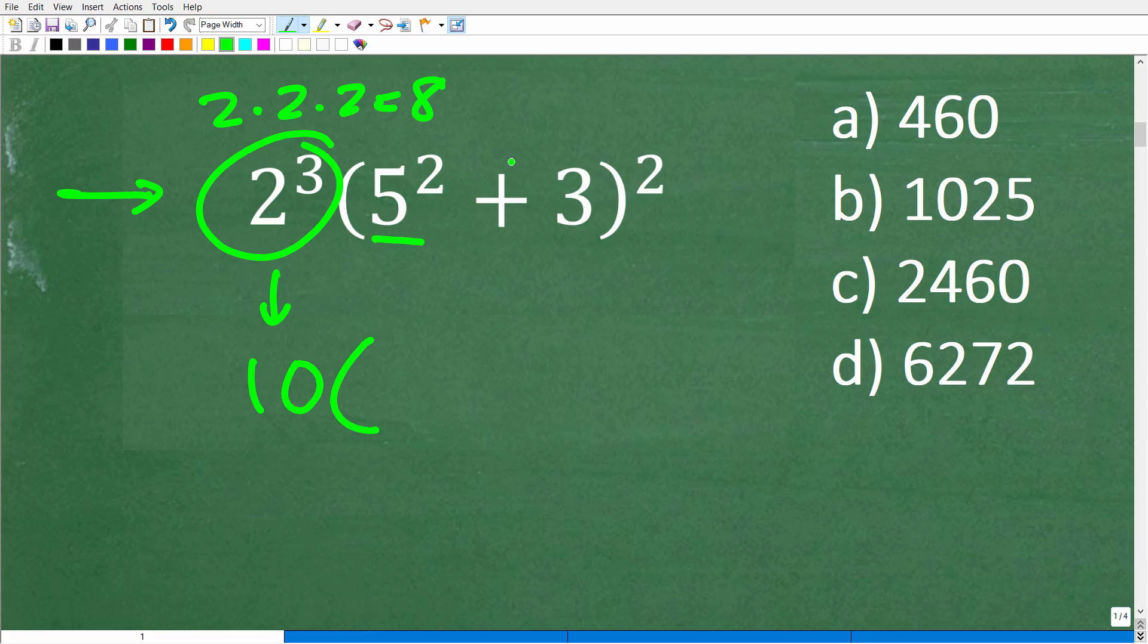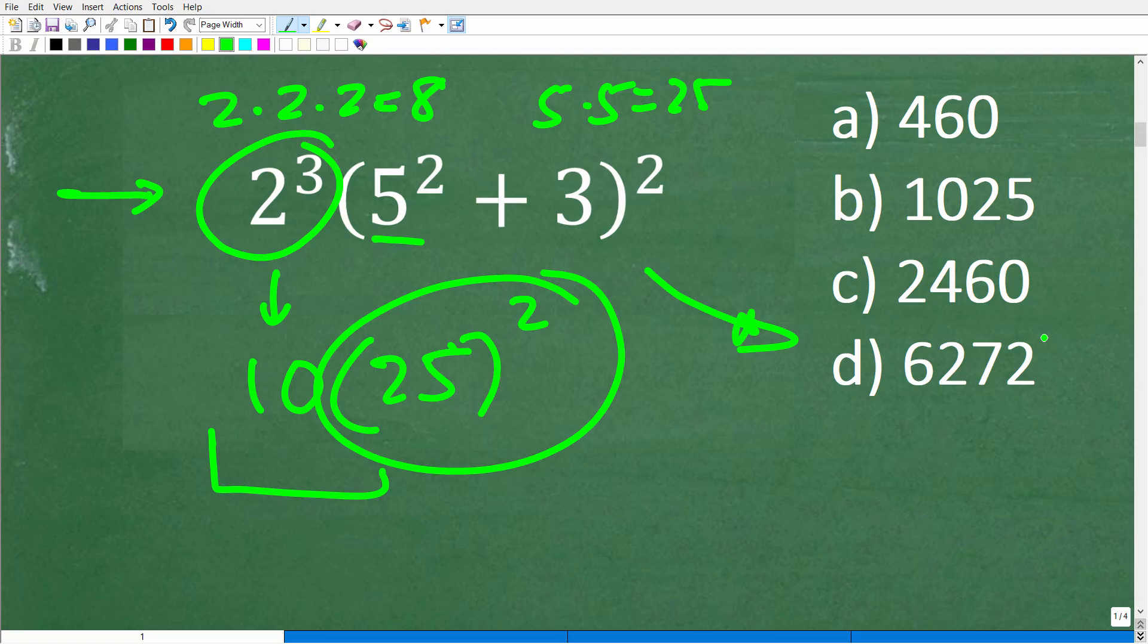So two to the third power is what? Well, that's two times two times two or eight. So you could kind of round that up to 10. And now you have five squared, which is what? Well, that's five times five or 25. So you can have 25, but we have to square this. Okay. So we have 25 squared. So you're going to have to kind of estimate this value and multiply it by 10. But if you kind of play around with this for a little bit and just kind of did some estimating, you would see that this is kind of the only reasonable answer.